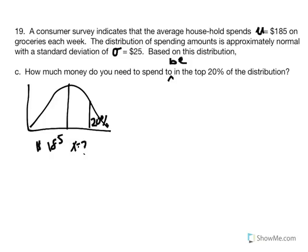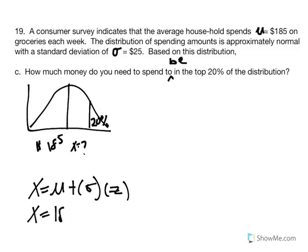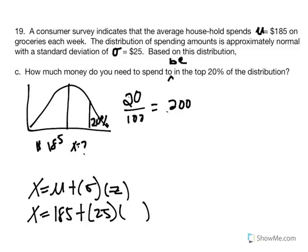With mean $185 and standard deviation $25, we need to find Z. Converting 20% to a proportion gives 0.2000. We find the corresponding Z score in the tail of the unit normal table. Looking for proportion 0.2000, the closest value is 0.2005, giving a Z score of 0.84.